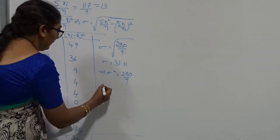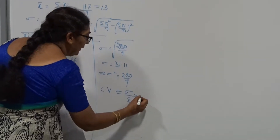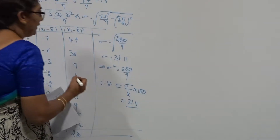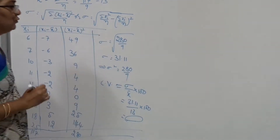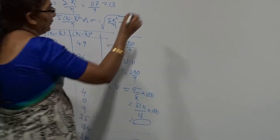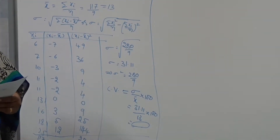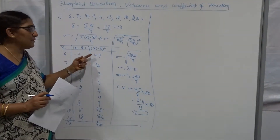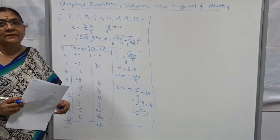How to find the coefficient of variation: CV is nothing but sigma divided by x-bar into 100. What is sigma? Approximately 5.57 — divided by x-bar which is 13, into 100. Write the answer approximately to 2, 4, or 5 decimal places. I request everyone to give the answer to 5 decimal places for more accuracy. I have taken the direct method here, and I explained why. If we want to find the alternative method: sigma xi squared by n minus (sigma xi by n) whole squared — we get the same answer because the mean is an exact value here.